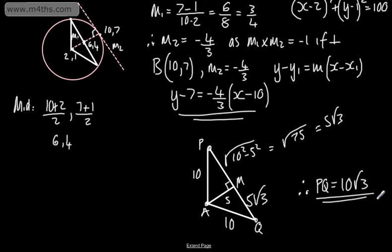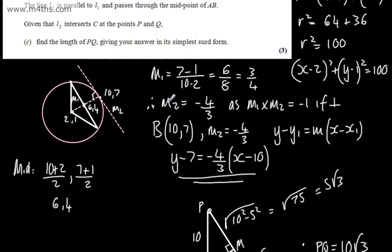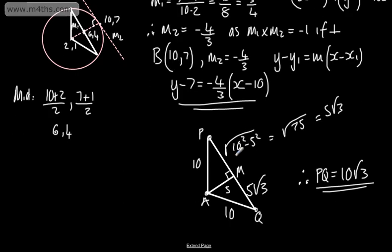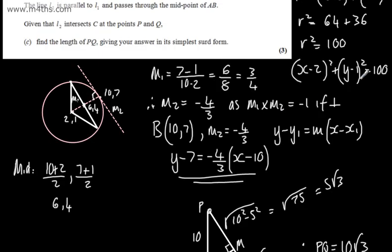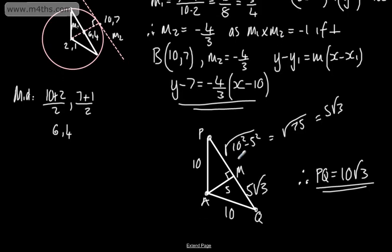So that gives us our final answer. There are a few different ways you could do that — quite a lot of work for 3 marks, but it makes sense. Since (6, 4) is the midpoint of AB, the distance from A to that point is 5, and knowing the radius is 10, we use Pythagoras and double the result to get PQ = 10√3.